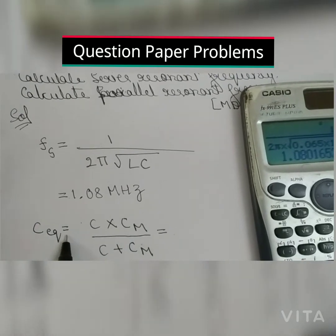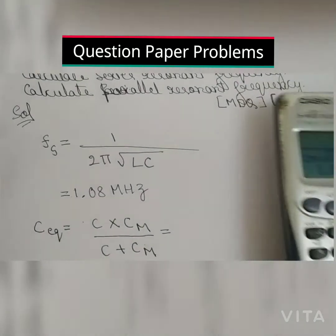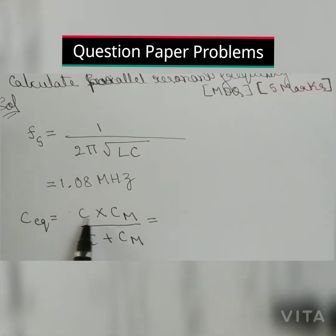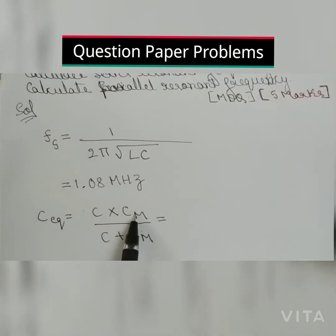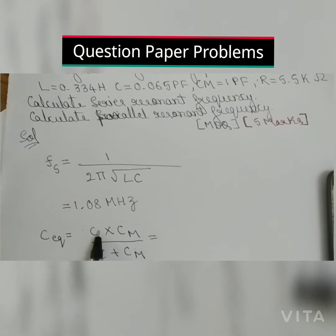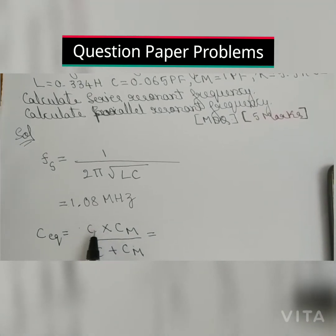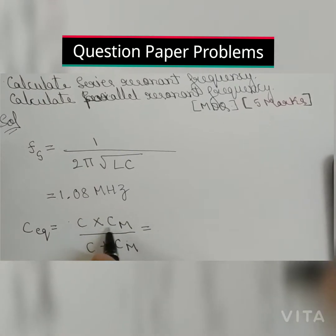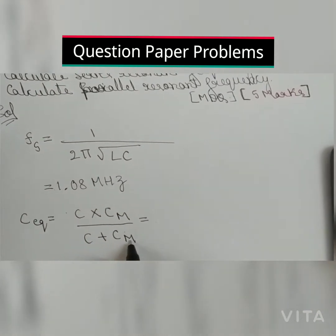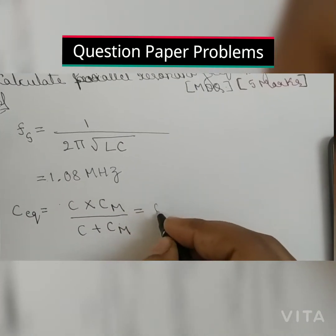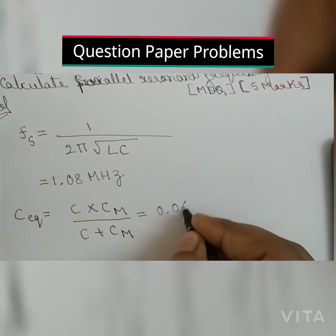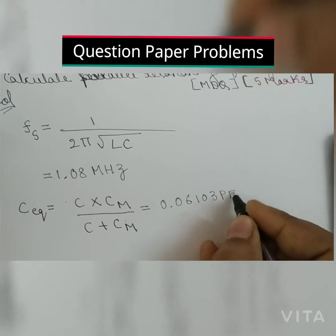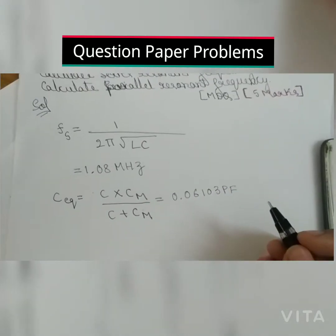Next, before going to the parallel resonant frequency, first we need to find out C equation. The given values are CM equals 1 picofarad and C equals 0.065 picofarad. When you solve C equation, that is C times CM divided by C plus CM, you will get 0.0610 picofarad.